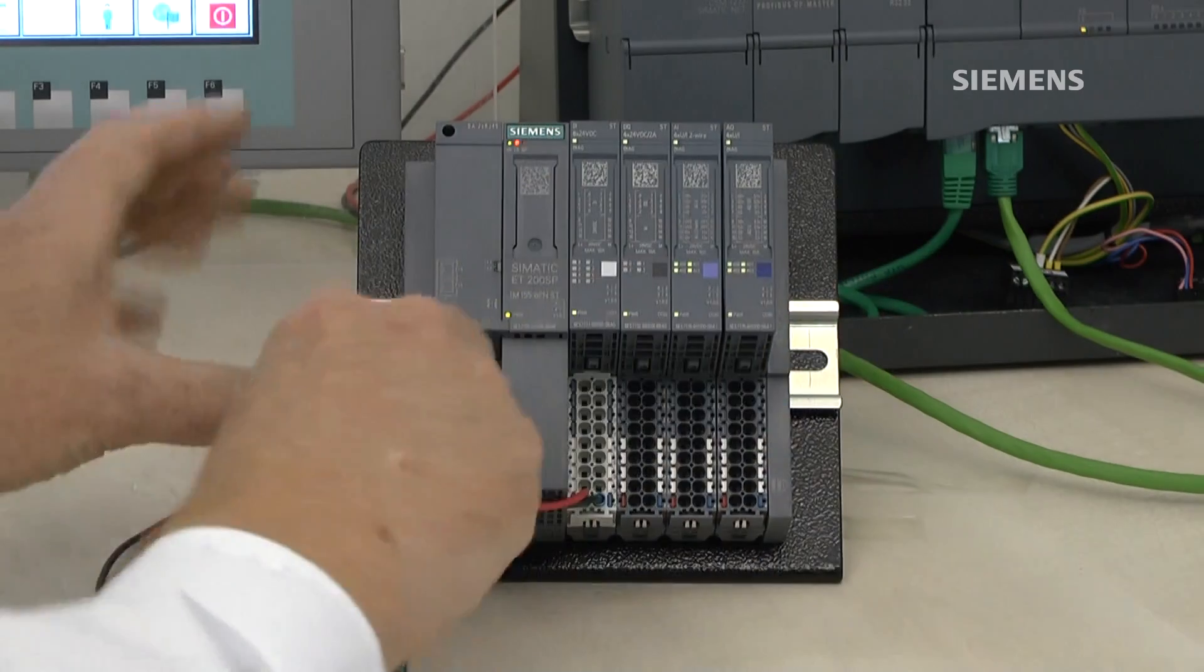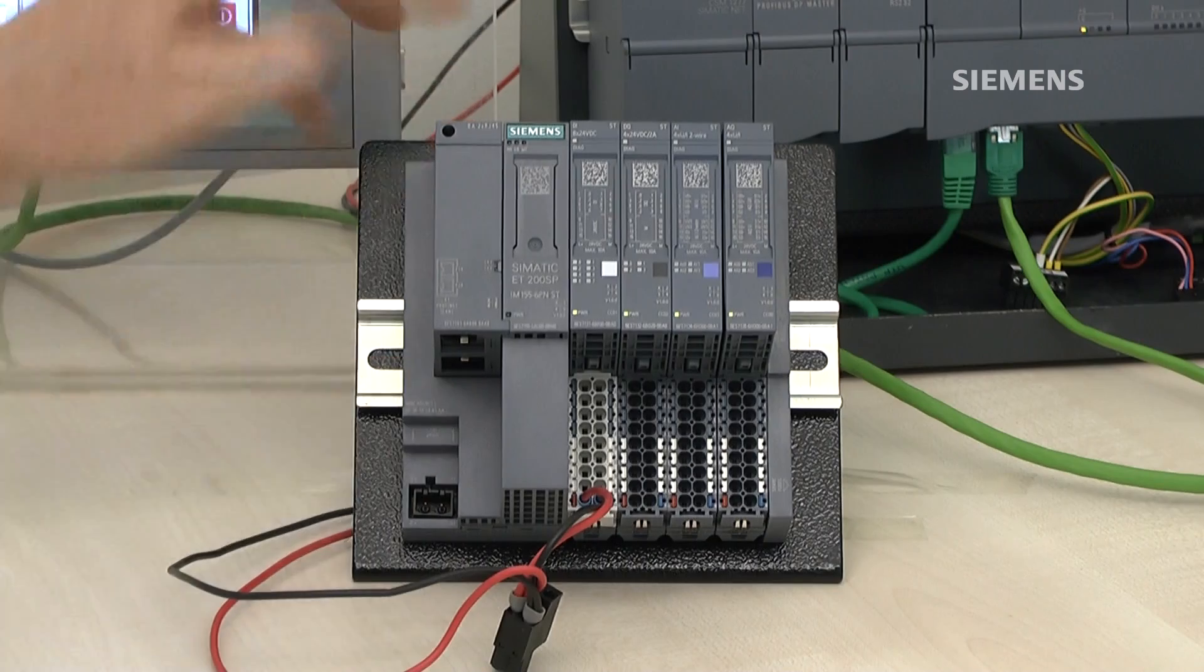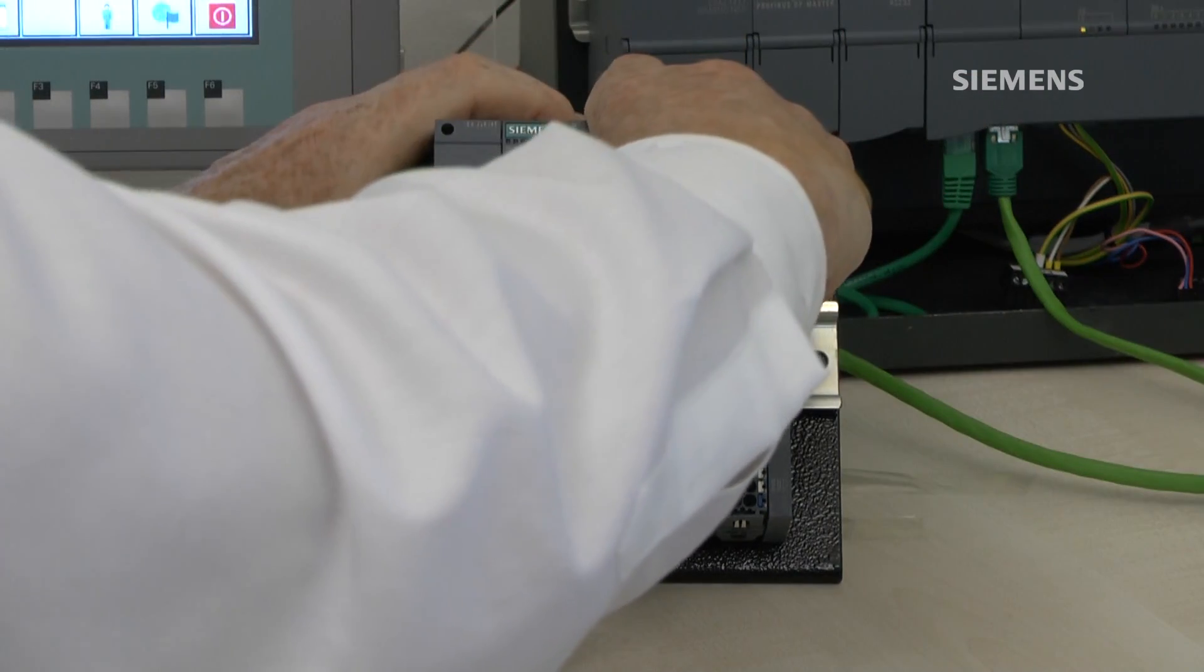So this node is now disabled. The CPU has an error LED. I'm going to take the ET200 header off.